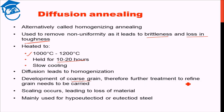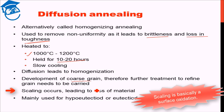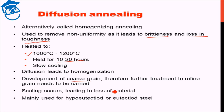In addition, the fact that the temperature is so high leads to large-scale scaling. Scaling is basically surface oxidation — thick layers of oxidation take place on the surface which need to be peeled away, leading to a loss of material. Finally, the diffusion annealing process is normally carried out in hypo-eutectoid and eutectoid steels.